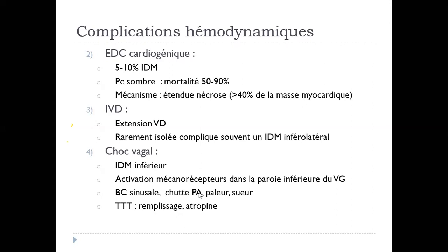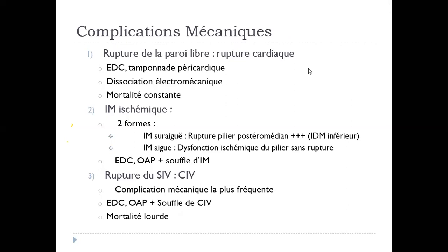Quatrième complication : le choc vagal, généralement c'est l'EDM inférieur. On peut avoir une bradycardie sinusale avec une chute tensionnelle qui répond au remplissage et à l'atropine. Parfois on peut même avoir des BAV. Les BAV lors d'un EDM inférieur sont très fréquents, généralement en rapport avec une hypersonie vagale, et le patient récupère par l'injection d'atropine.